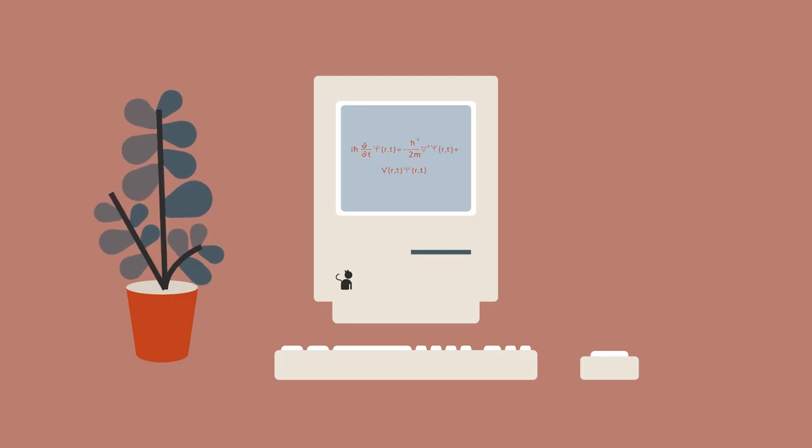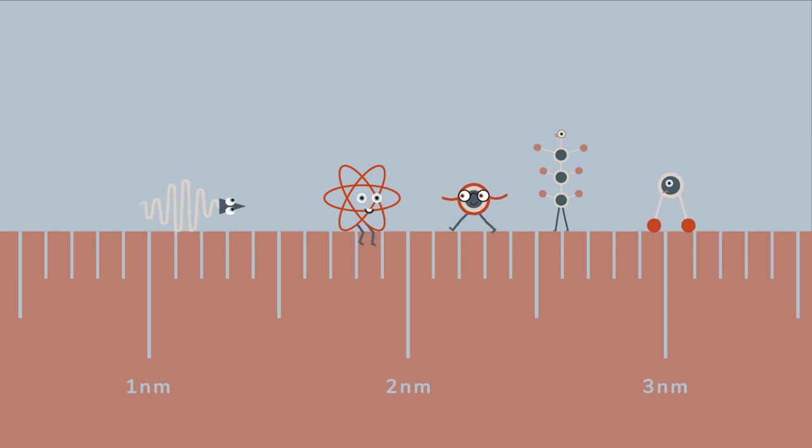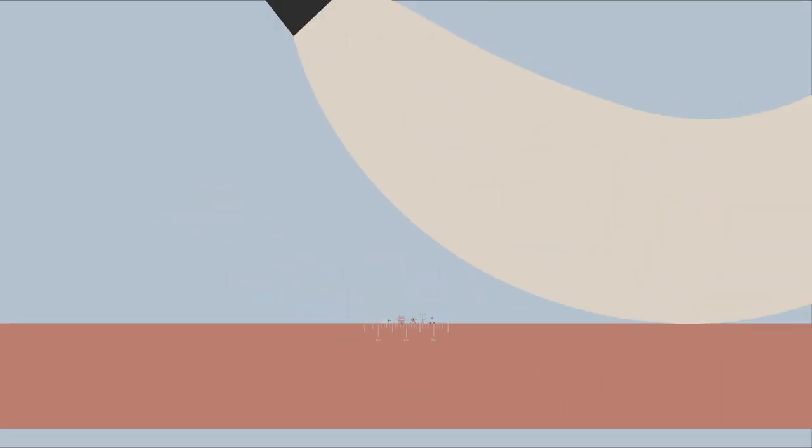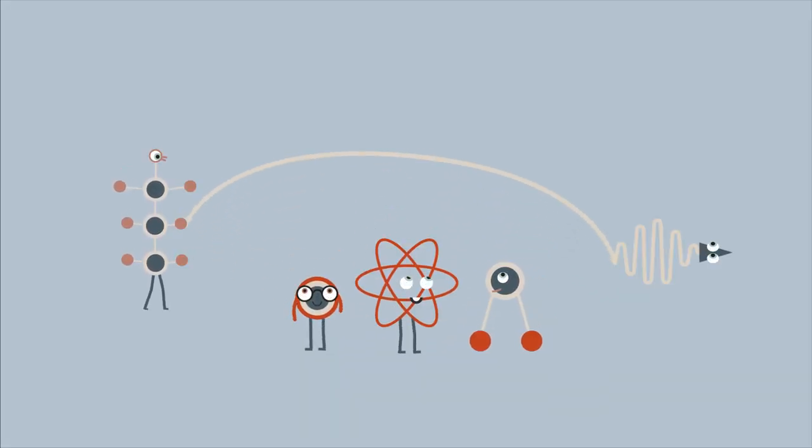Don't worry if you have no idea what that means. We'll update you on quantum theory first. Quantum physics describe the states of the smallest objects, such as atoms and molecules. They constitute the basis of our world and behave in strange ways.